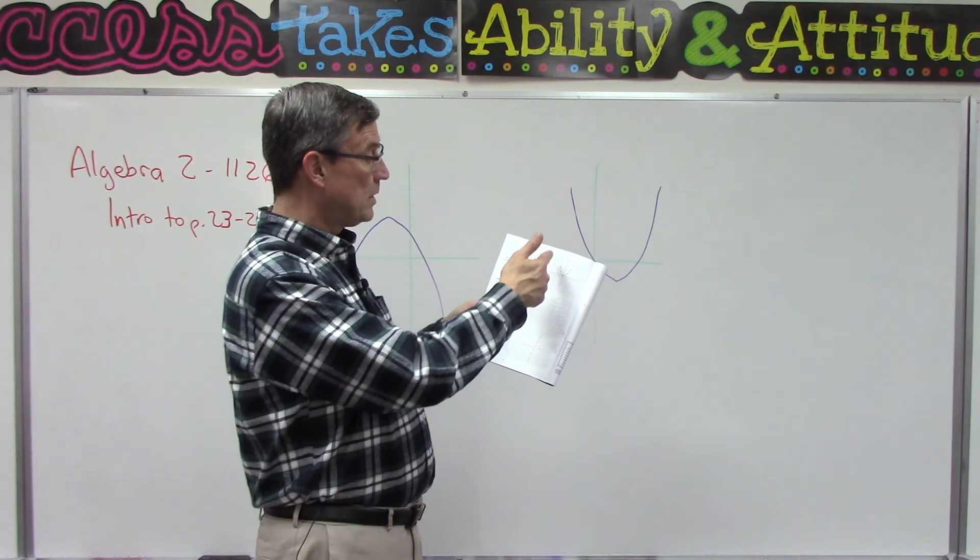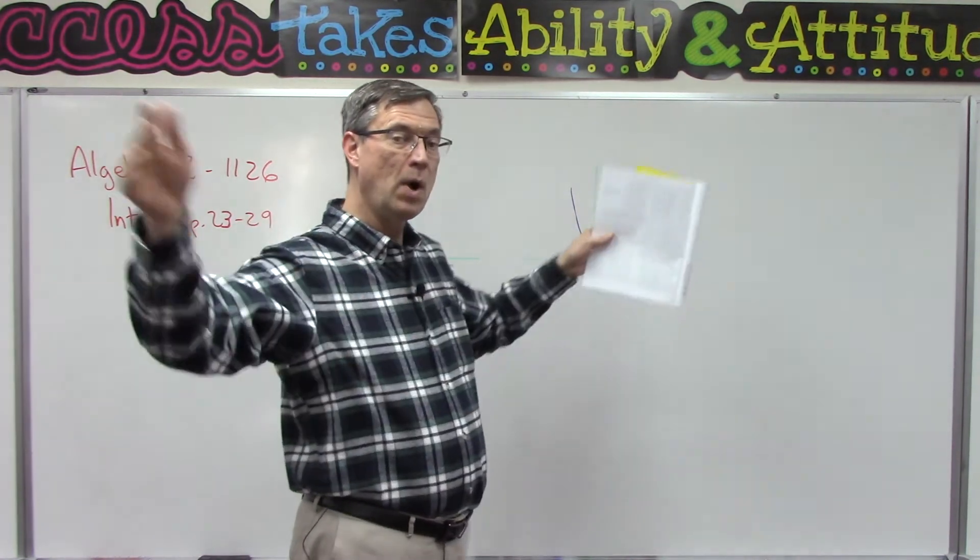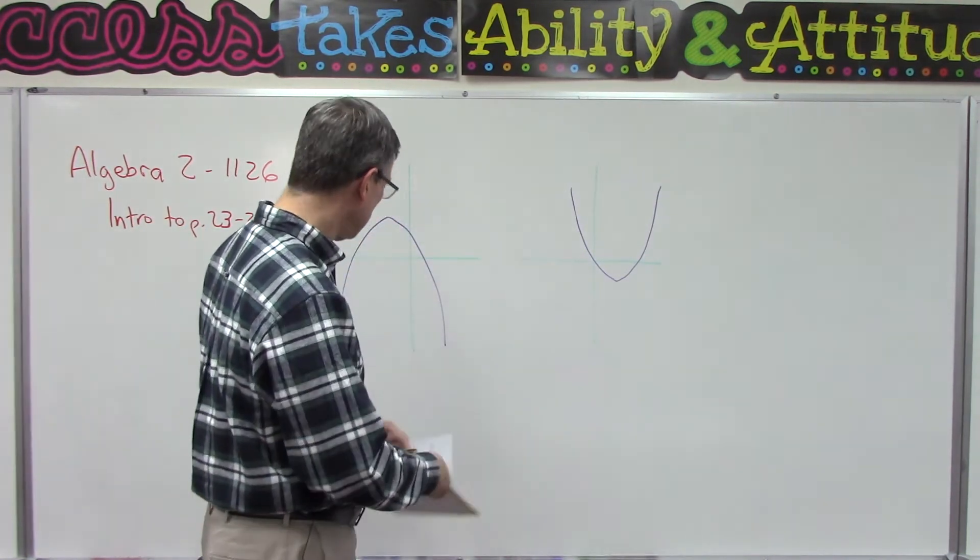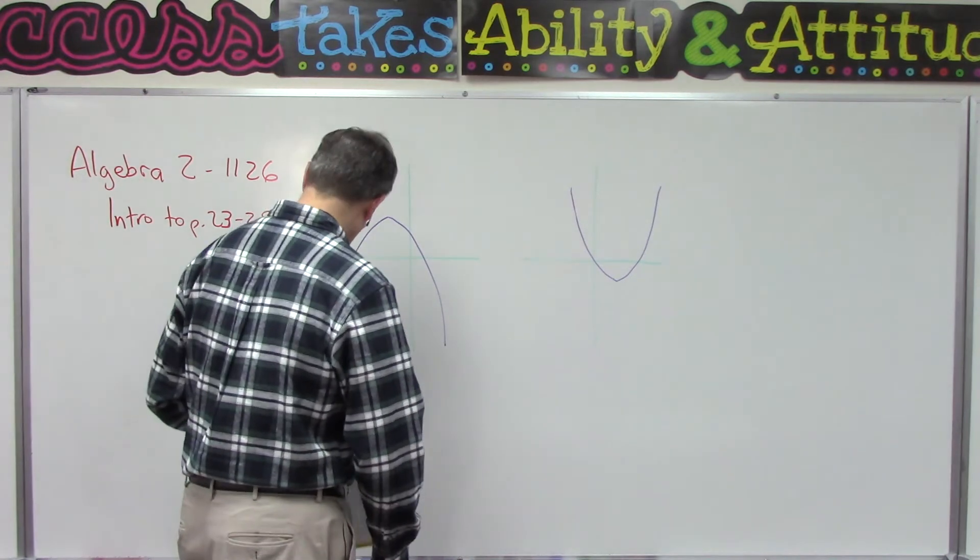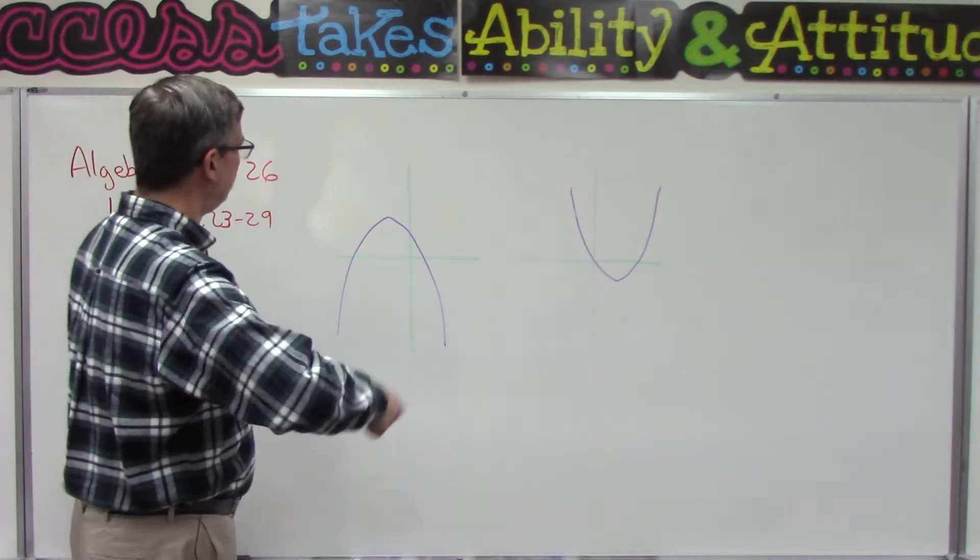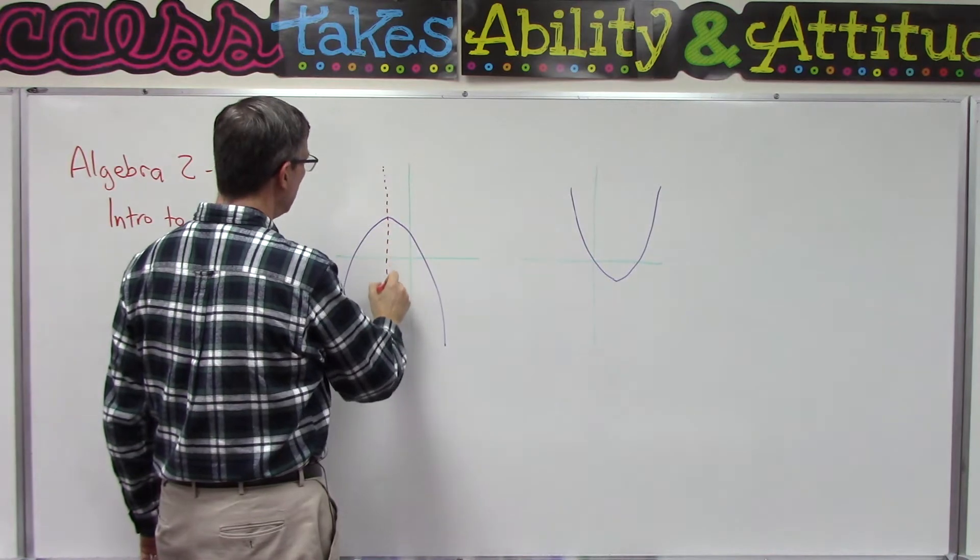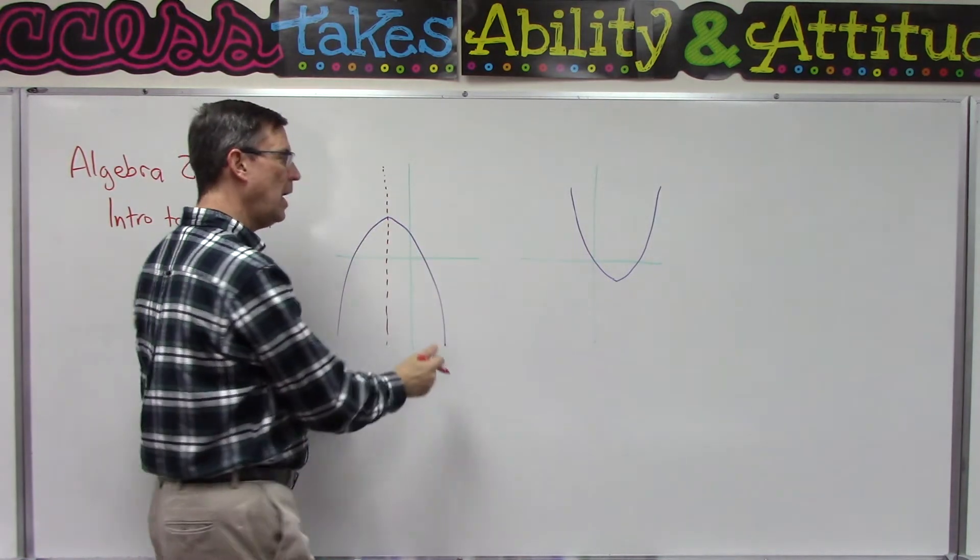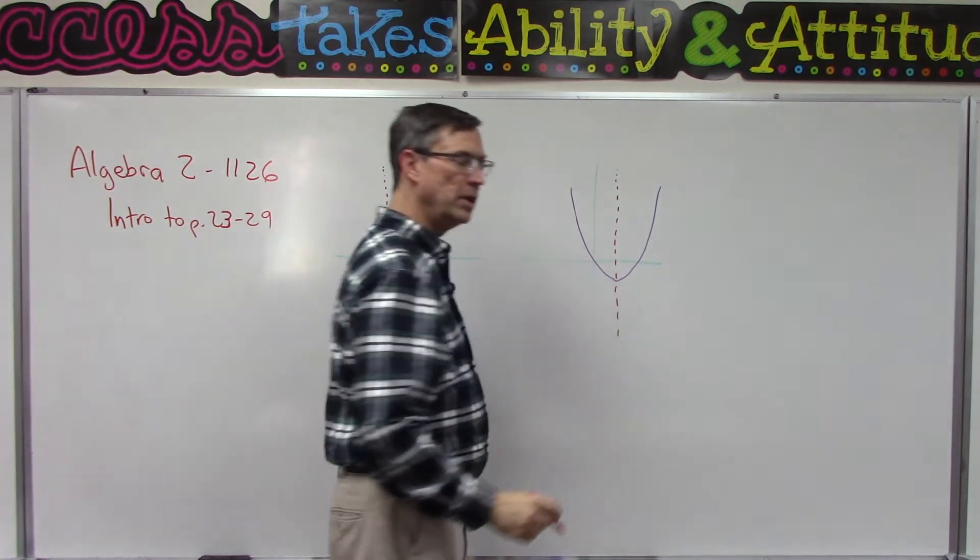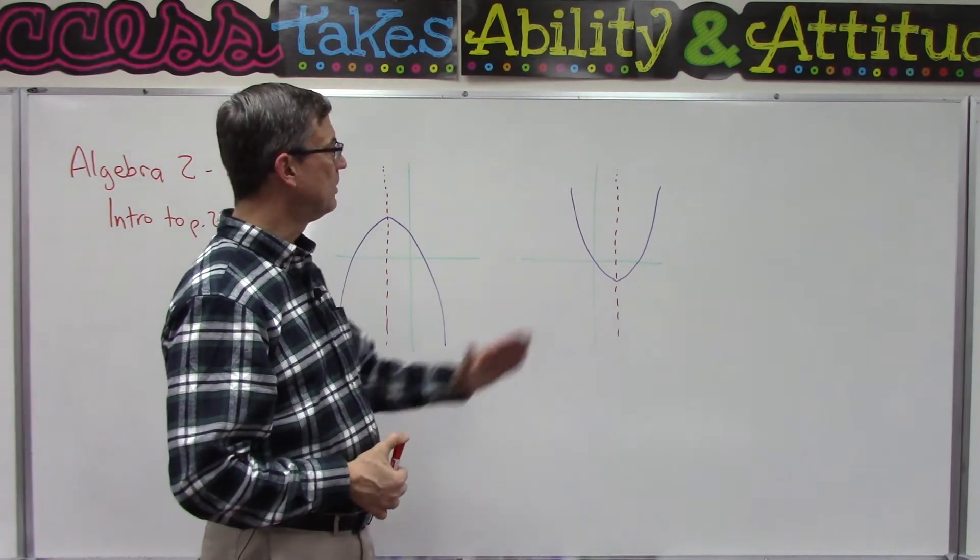You'll notice every time you do that, it's either going to open up or open down. It might open wide, it might open kind of narrow, but there are two important things we're always going to notice when we graph these. One is there's going to be like an invisible line going right down the middle of it, and the two halves form a mirror image on either side of that. That's called the axis of symmetry because it's symmetrical on both sides of that axis.